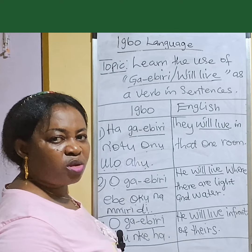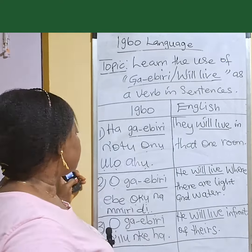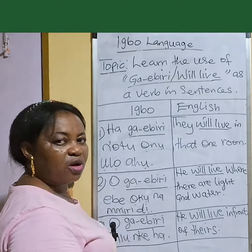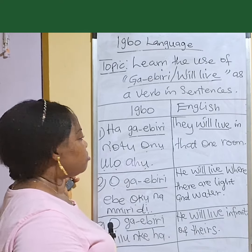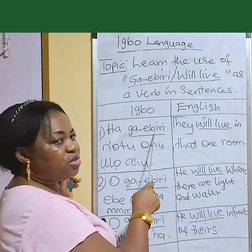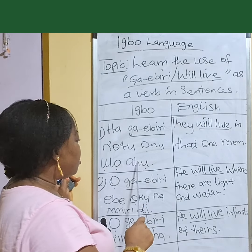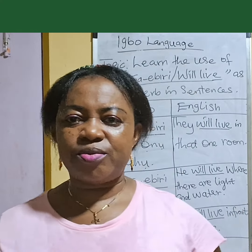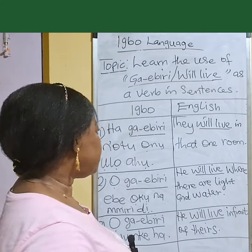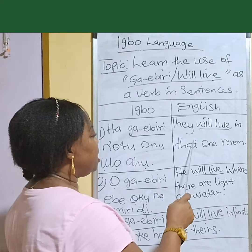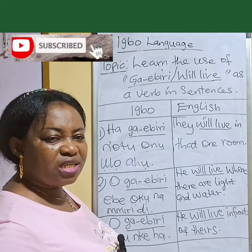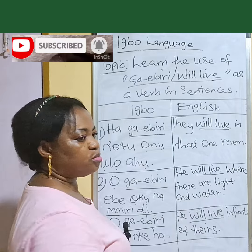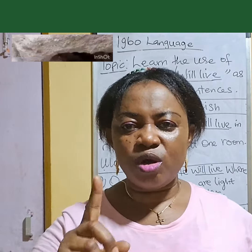Igbo-English. Number one sentence says: 'Ha ga ebiri no tu ono olo aham.' Ha ga ebiri no tu ono olo aham. It means: there we live in that one room. Class again: there we live in that one room.